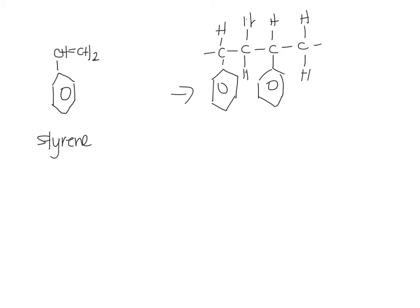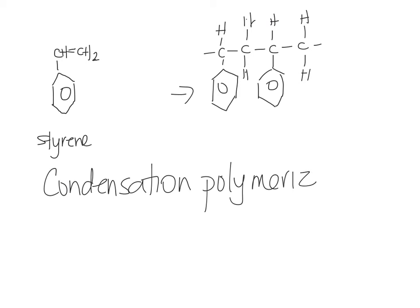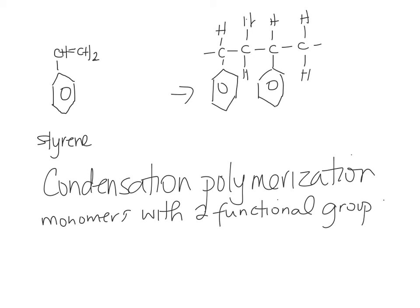So condensation polymers. This is the other way to form polymers. Basically you have monomers with two functional groups. They have to have two because you have to be able to add on either side.